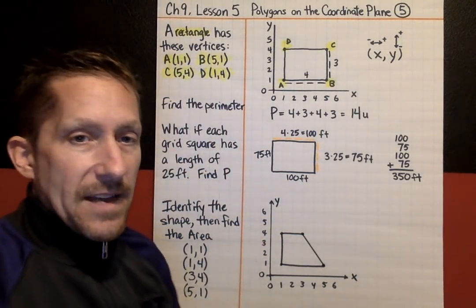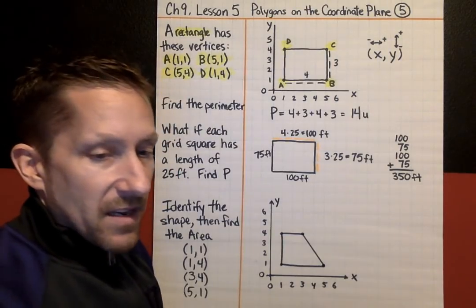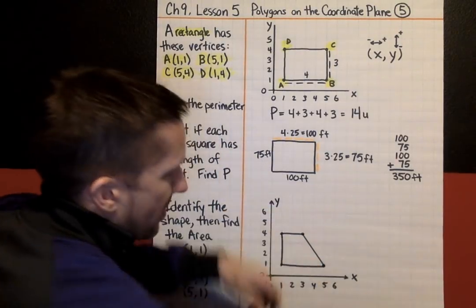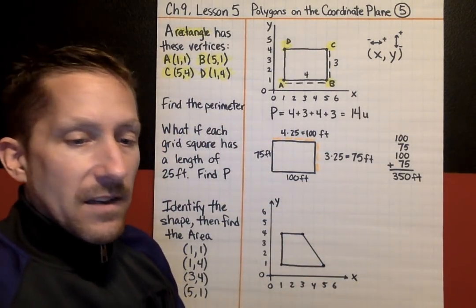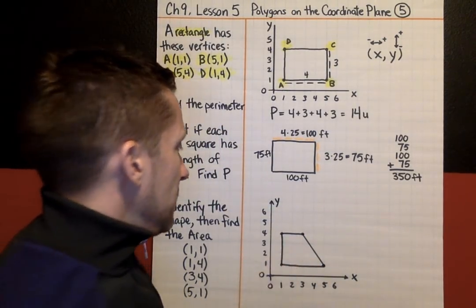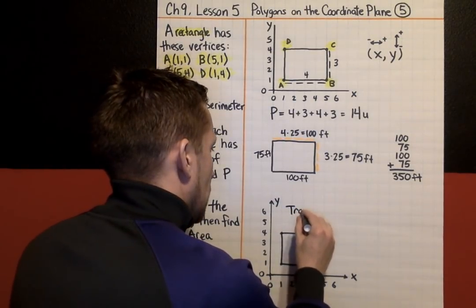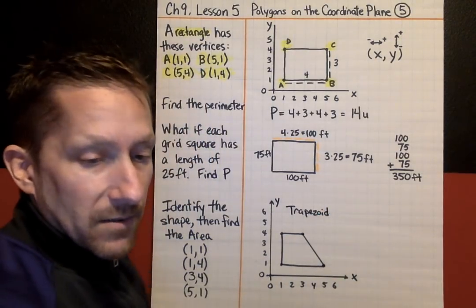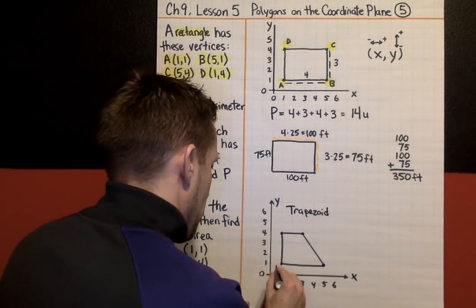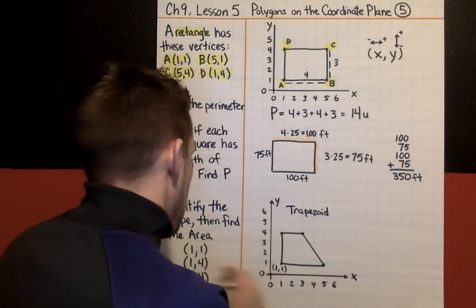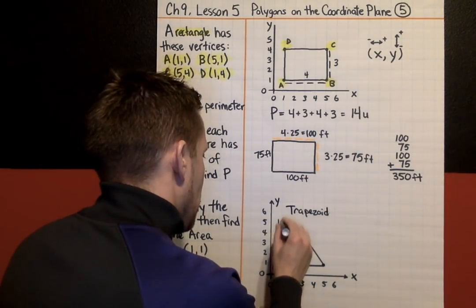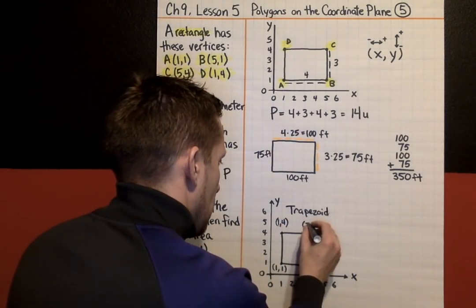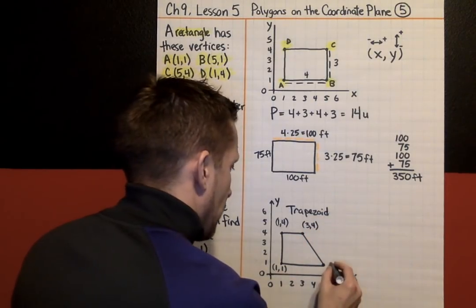Hopefully you can identify that shape. Not a rectangle. It is a trapezoid. It has one pair of parallel bases. This is a trapezoid. And let's go back and put our coordinates: (1,1), (1,4), (3,4), and (5,1).